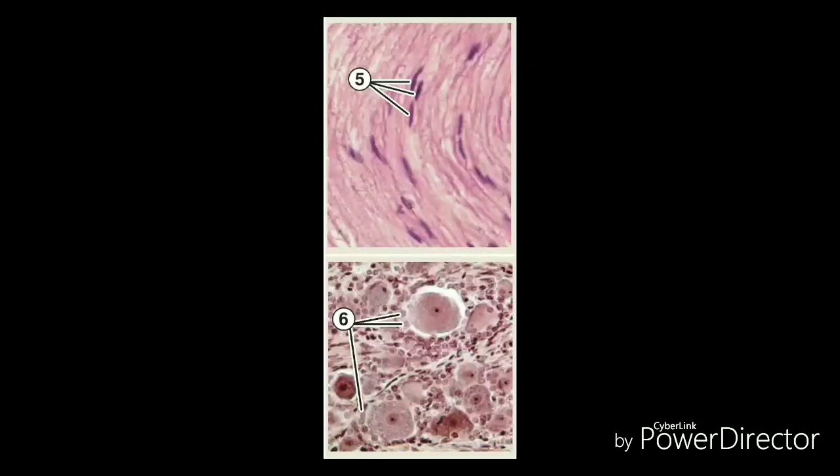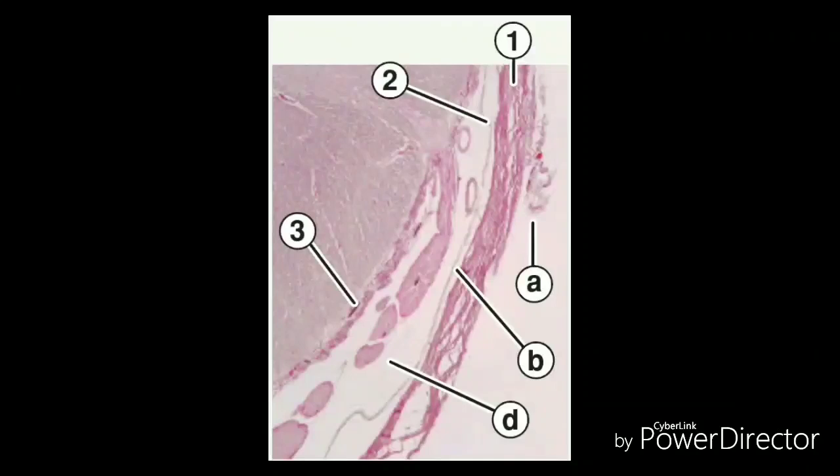The spinal nerves innervate specific areas and form a stripe pattern across the body called dermatomes. Doctors use this pattern to diagnose the location of a spinal problem based on the area of pain or muscle weakness. For example, leg pain or sciatica usually indicates a problem near the L4-S3 nerves.